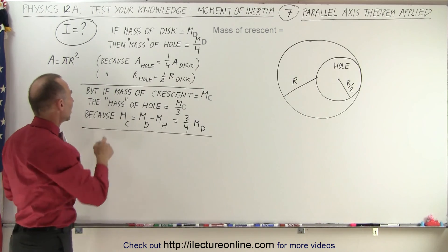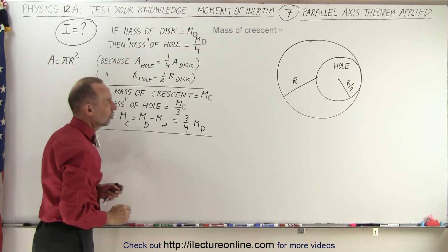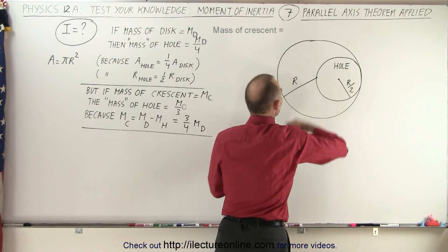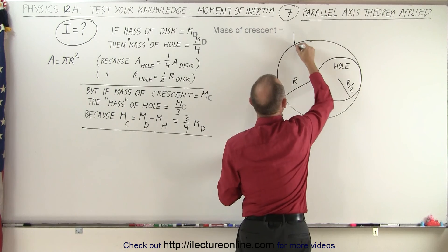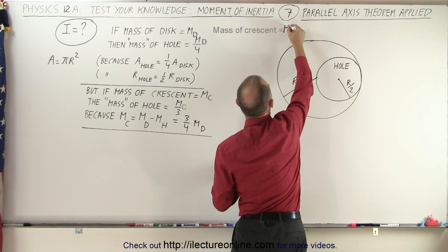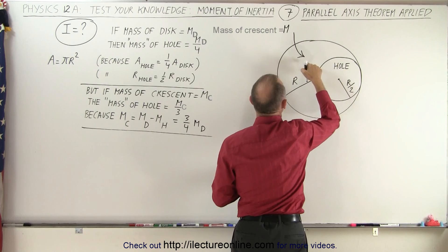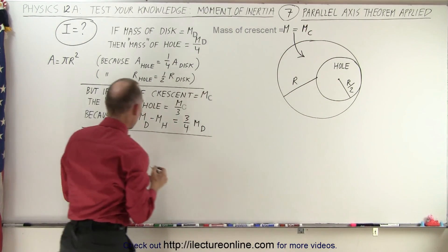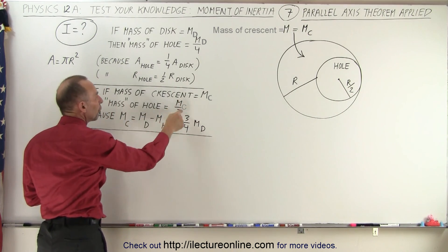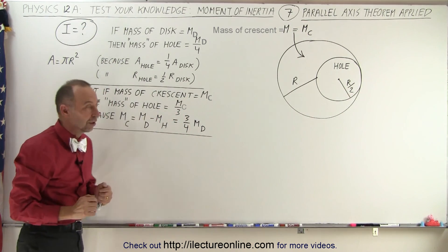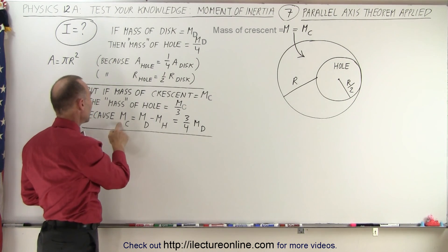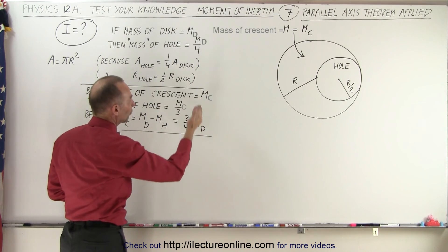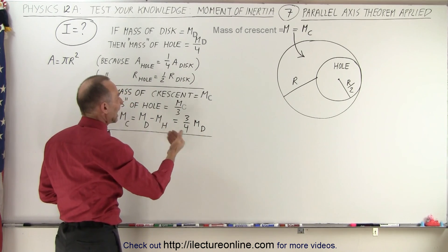Now, if we let M equal the mass of the crescent — the remaining portion after the hole was cut out — that's what we're going to do for this problem. We let M be the mass of the crescent. If we do that, then the mass of the hole is one-third the mass of the crescent, because the mass of the crescent is three-quarters the mass of the whole disc. Taking one-quarter of three-quarters gives you one-third.